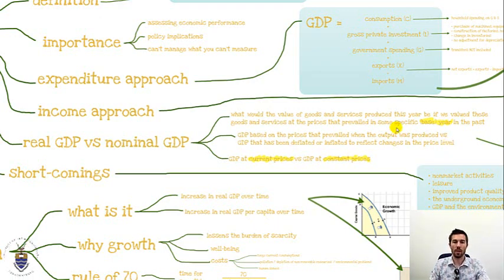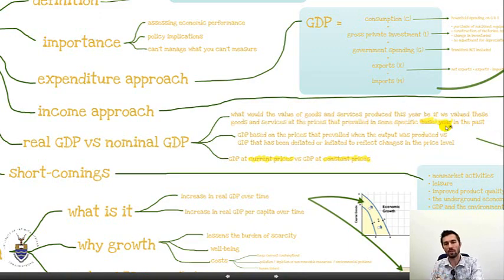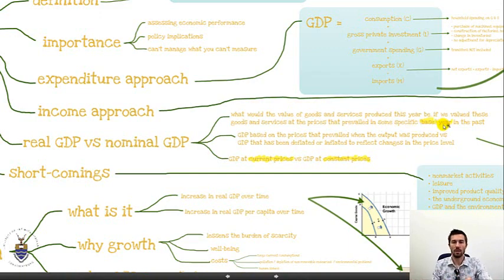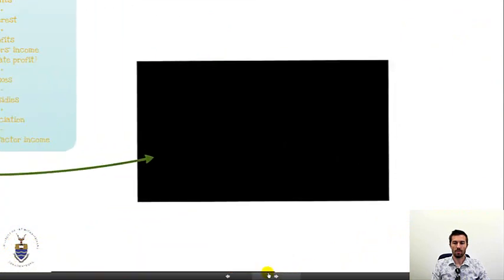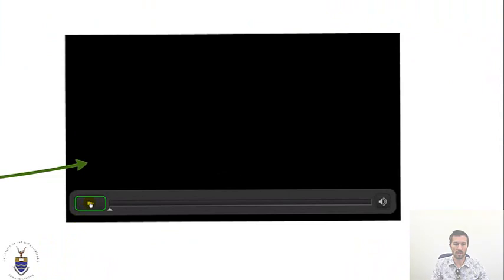Essentially, real GDP asks: what would the value of goods and services produced this year be if we valued them at the prices that prevailed in some specific base year? In other words, what would the value of 2012 output be in year 2000 prices? Let's look at an example — here we have Uncle Chris giving us a blackboard example of adjusting for inflation.